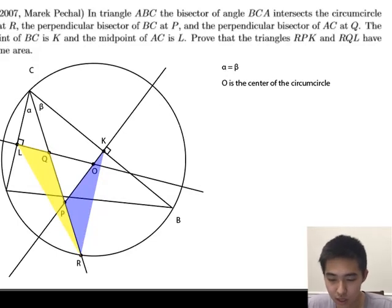Next, we see that since angle PKC is 90 degrees, then angle KPC is 90 minus beta. Similarly, we have angle OQP is equal to CQL, which is equal to 90 minus alpha. Since alpha is equal to beta, then angle OQP is equal to angle OPQ. This implies that OP is equal to OQ.